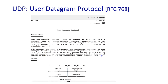UDP is defined in RFC 768. It's always a good idea to read at least one RFC to see what an internet protocol specification looks like. UDP being simple means it's short — only about three pages — so if you're going to read one internet RFC, this might be the easiest one.